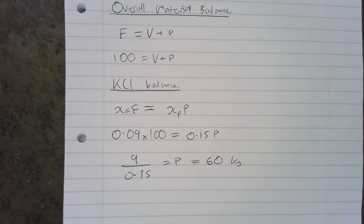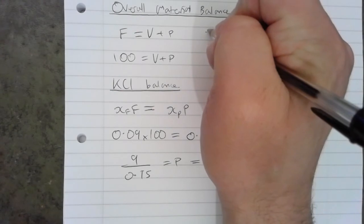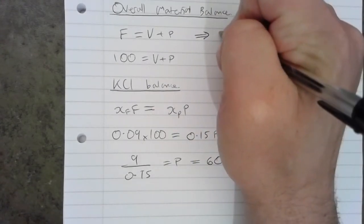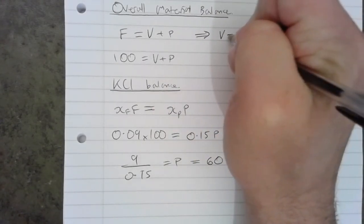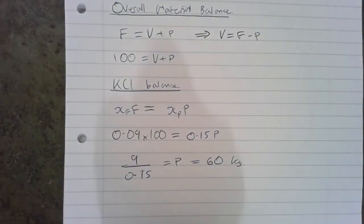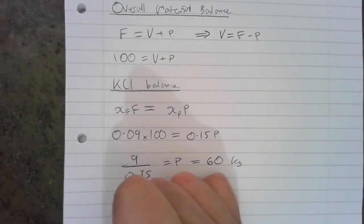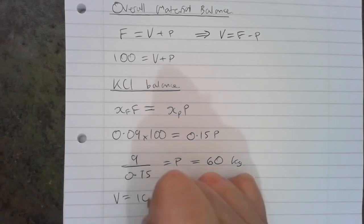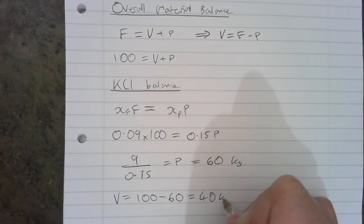So we have to rearrange the overall material balance and say that V equals F minus P. So V equals 100 minus 60, which is 40 kilograms. So we need to evaporate 40 kilograms of water.